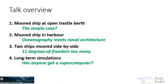The topics we're going to be talking about are: firstly what should be the simple case, which is a moored ship at an open trestle berth with no wave reflection and just open water wave conditions. Then we're going to look at a harbour where oceanography meets naval architecture. Then we'll talk about side-by-side ship motion problems, 12 degrees of freedom — which I'm told is 11 degrees too many.